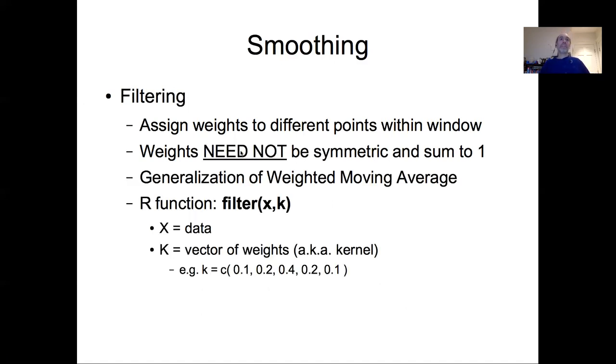To generalize a bit beyond the weighted moving average is the idea of a filter. A filter is any function moving forward through time that assigns weights to different points within a window. But in the idea of a filter, the weights do not need to be symmetric and they do not need to sum to one. That said, it's pretty common to choose them to sum to one, but they don't necessarily need to be symmetric. It's a generalization of the weighted moving average. You can use a weighted moving average as a special case of a filter, but you can also filter more generally.